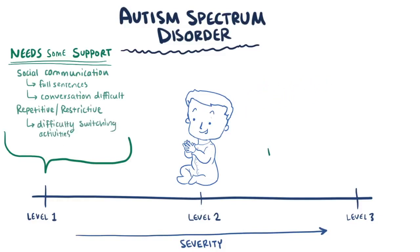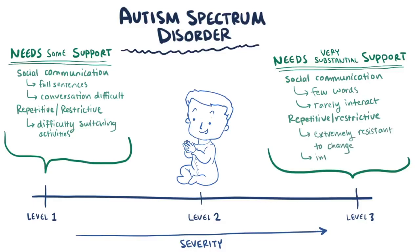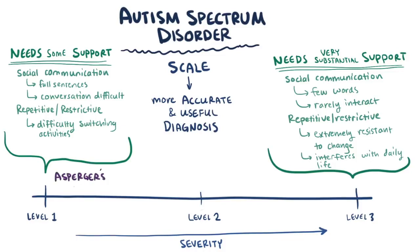On the other side of the spectrum, a level 3 severity means the child needs very substantial support. On the social communication side, they might display very few intelligible words or rarely initiate an interaction with others. For repetitive behaviors, they might be extremely resistant to change and their behaviors seriously interfere with daily life. It's thought that using this scale of symptoms, as opposed to differentiating between pervasive developmental disorders, will help give a more accurate and medically useful way to diagnose individuals. Those with what was previously described as Asperger's syndrome would likely fall closer to severity level 1 than level 3.